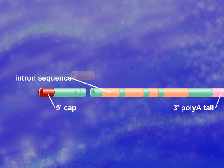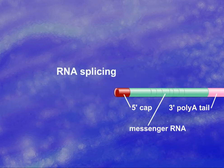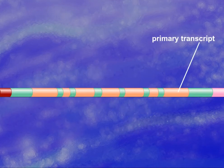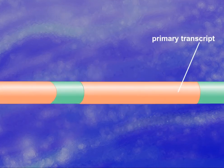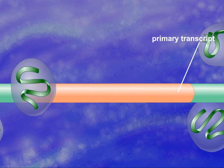The intron sequences are then removed by the process of RNA splicing. The intron-exon junctions are recognized by small nuclear ribonucleoproteins called SNRNPs.